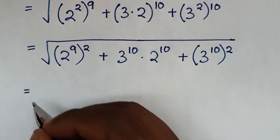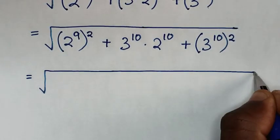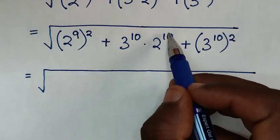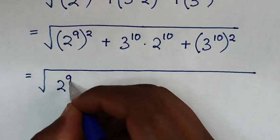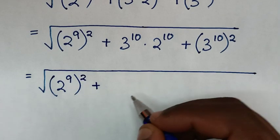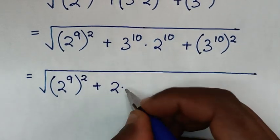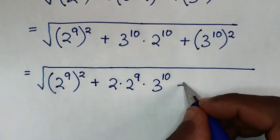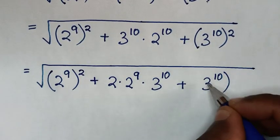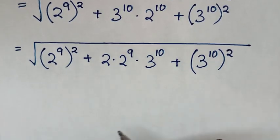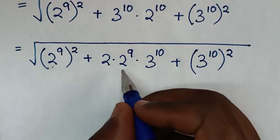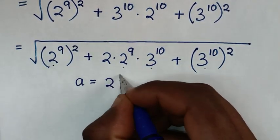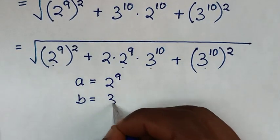From here it will be 2^10 under the square root. We can see that 2^9 is common and 3^10 is common, so let a equal to 2^9 and b equal to 3^10.